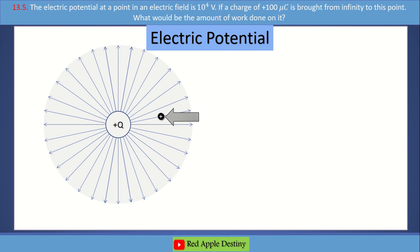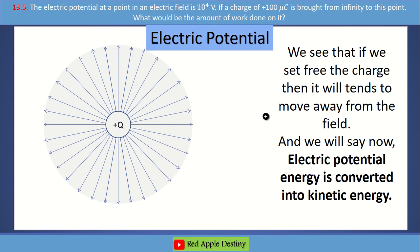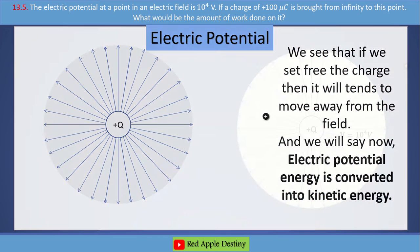If we set the unit positive charge free, it will move along the field. In this situation, electric potential energy converts to kinetic energy.